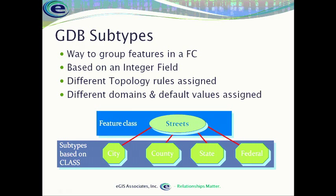We want to do that because each one of these is owned and maintained by a different group — the city, the county, the state, or the feds — but also because we may have different default values. Maybe all city streets are primarily paved with asphalt, so we can assign that as a default value to the city subtype. County roads in a rural area might still be gravel or dirt, so we assign that as the default pavement value. State roads are similar to city and are asphalt, while federal highways may be paved in concrete. We can subclassify these into subtypes and assign different default values for attribute fields.